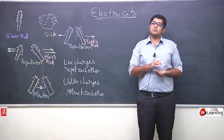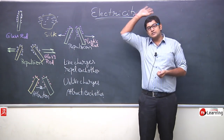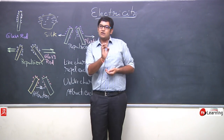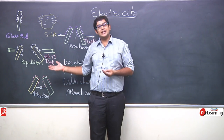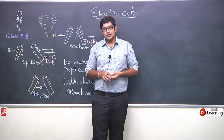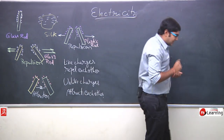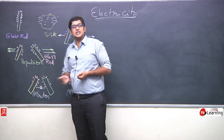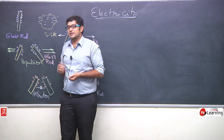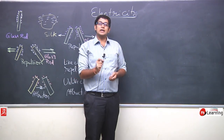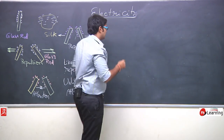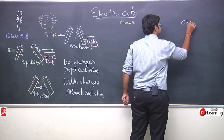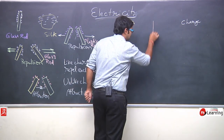We will compare two fundamental properties: mass and charge. The first property — mass is measured in grams. Similarly, charge is measured in coulombs. Just as gram is the unit for mass, coulomb is the unit for charge. Gram is written as 'gm' and coulomb is represented by capital C.